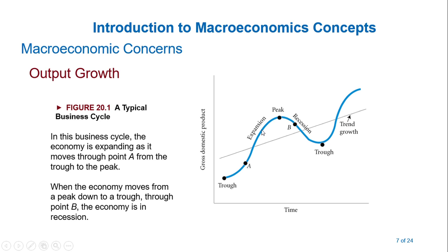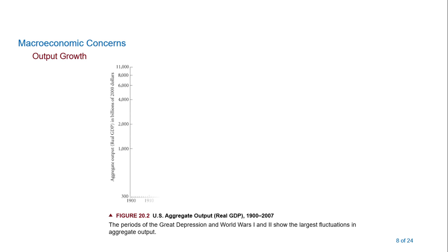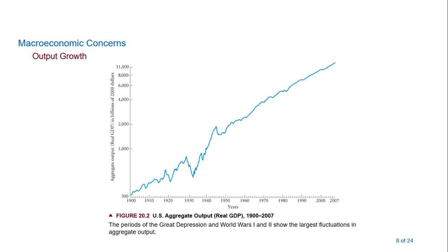When the economy moves from the peak to the trough, the economy is in recession. So this is the recession part. Recession means falling, expansion means rising. That is a diagrammatic illustration of a business cycle.